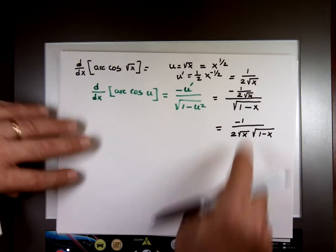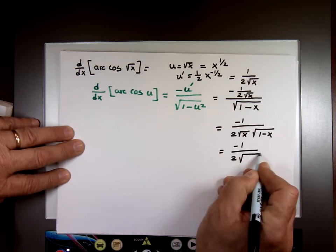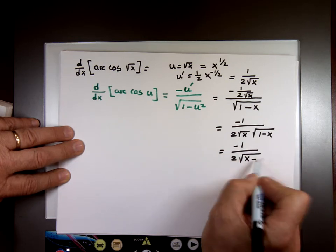And if you don't like to see two square roots on the bottom, you can rewrite that as, multiply them, x times 1, which is x, x times x, x squared.